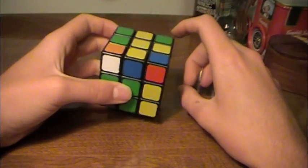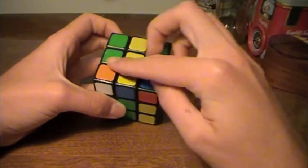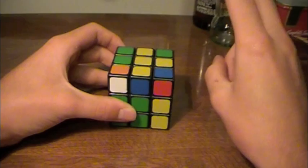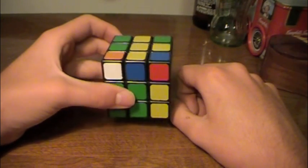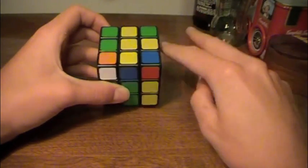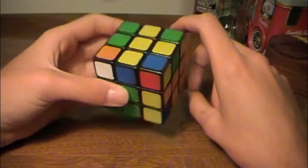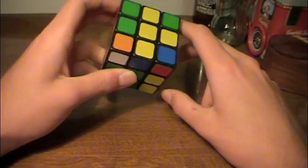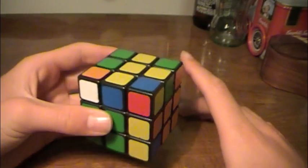What this branch is, is you solve the edges first, and then you solve two of the corners separately. I choose that because I'm not good enough to do the other one.